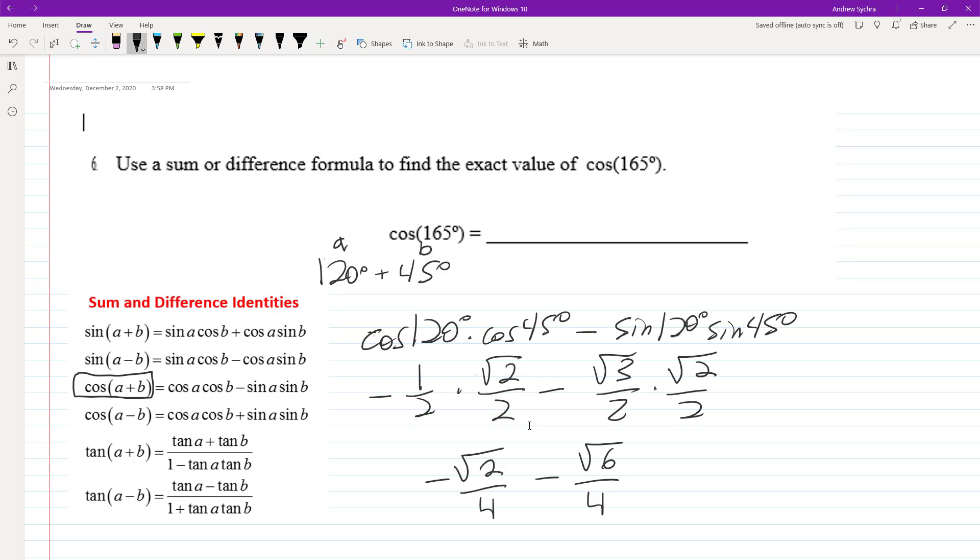They have a common denominator, so we can combine them in the numerator to get negative root 2 minus root 6 all over 4.